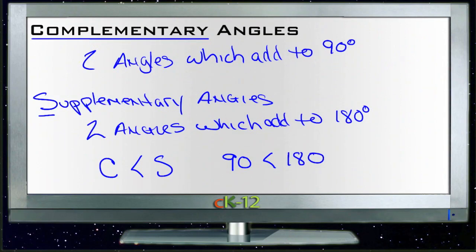The C and the 90 and the S and the 180 go together. The one that's later in the alphabet is the bigger one, and the one that's earlier in the alphabet is the smaller one.